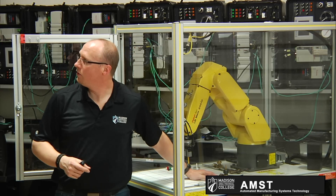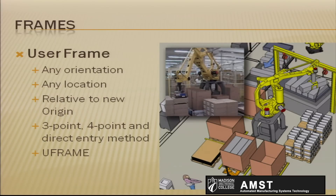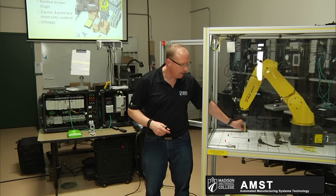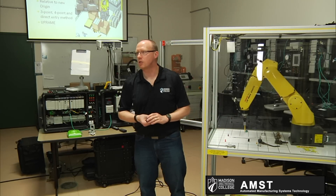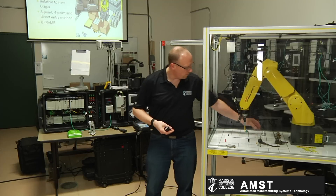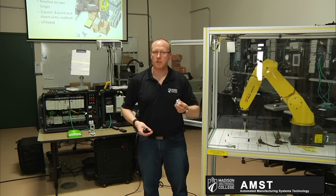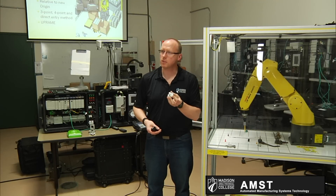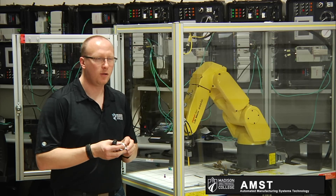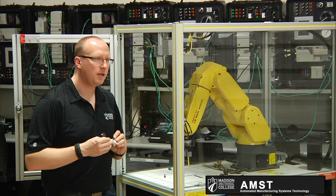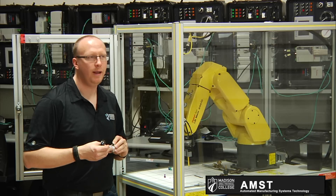User frames are typically used if you have parts that are fixtures and you identify the origin and x and y direction on your fixture so you can easily reteach them if needed. Industry often uses a specific point tool that's installed to make teaching the user frame easy, because sometimes your tooling does not allow for a good point that can be used to teach the origin and x and y direction.